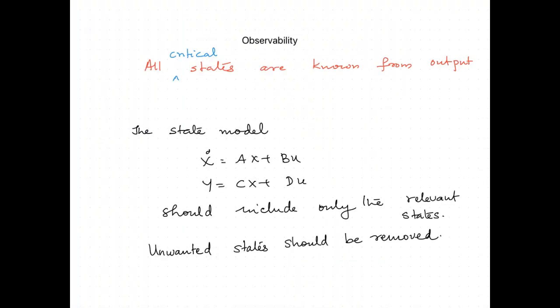Now we move to observability, defined as knowing all critical states. For the car example, the car's temperature can be known and treated as a state, but it is clear that the temperature has nothing to do with the dynamics of the system. As far as the dynamics are concerned, only the states position and velocity are required. When making a state model, it is important to know the relevant states; unwanted states can be removed. Observability basically implies knowledge of the critical states of the state model.